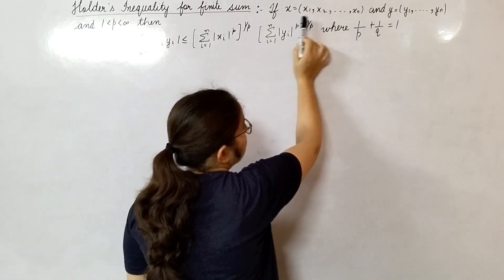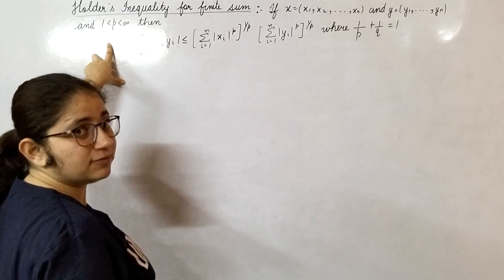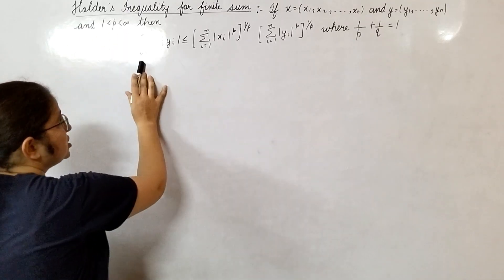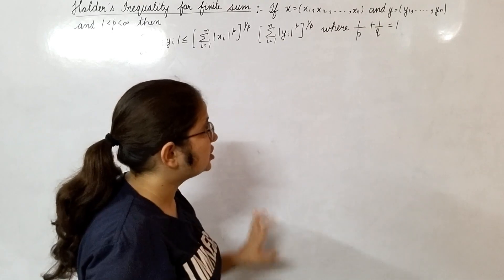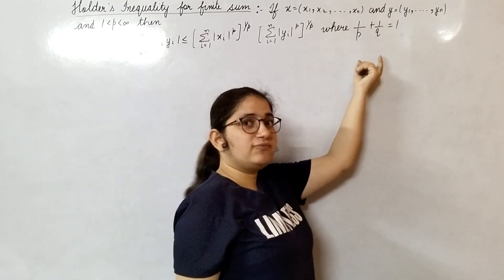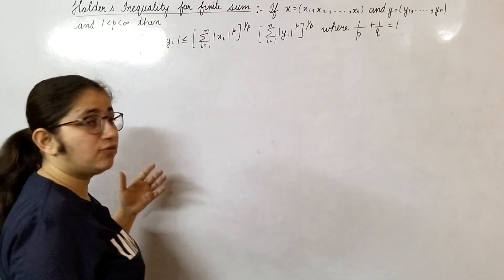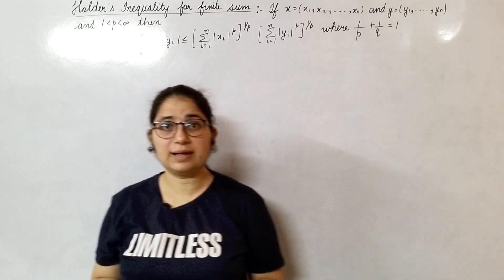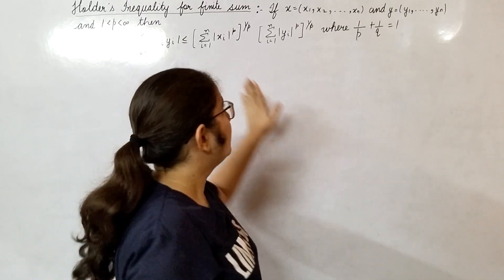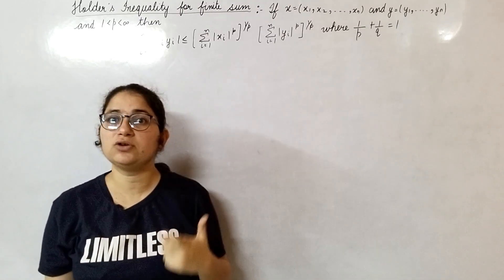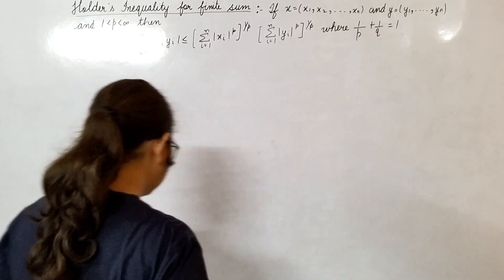Here x and y are n-tuples and the condition on p is that p lies between 1 and infinity. Then what we have to show is: summation from i equals 1 to n of |x_i y_i| is less than or equal to this expression, where the relation between p and q is 1/p + 1/q = 1. We will use Lemma 1 and Lemma 2 from the last videos — I told you those lemmas are going to help with the proof of Hölder's inequality. By the help of Lemma 1 we will show Hölder's inequality for finite sum, and for infinite sum we will use this finite sum result along with a property of convergence.